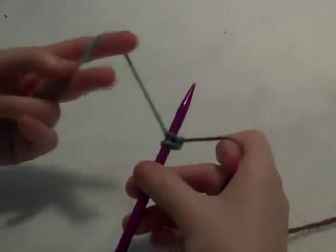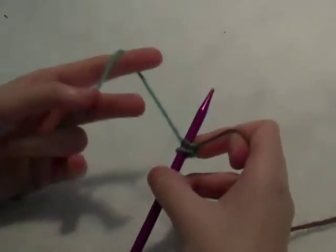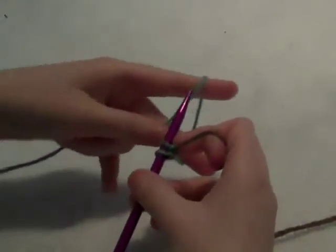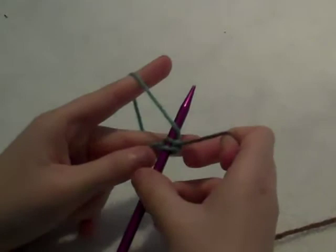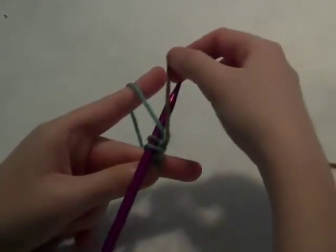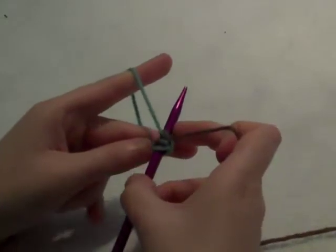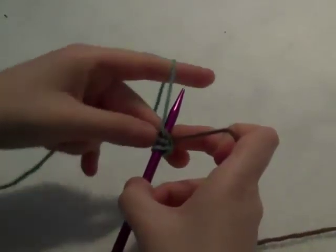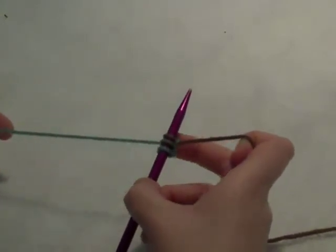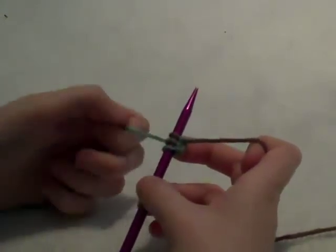Once again, to cast on, take your tail, place it over top of the needle in a little circle or triangle. Take the attached string, wrap it from front to back around the needle, take your tail triangle, pull it back over the needle and tighten.